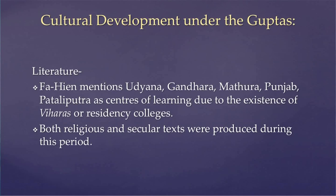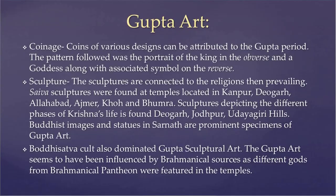Both religious and secular texts were produced during the Gupta period. Gupta art finds expression in coins, sculptures, and monuments. Coins in gold, copper, and silver of various designs were produced and circulated; the pattern followed was a portrait of the king on the obverse and a goddess along with associated symbols on the reverse. As far as sculpture is concerned, the sculptures are connected to the prevailing religion. Shaiva sculptures were found at temples in Kanpur, Deogar, Allahabad, Ajmer, Kho, and Bhumra, with Shaiva images or Lingas being prominent.